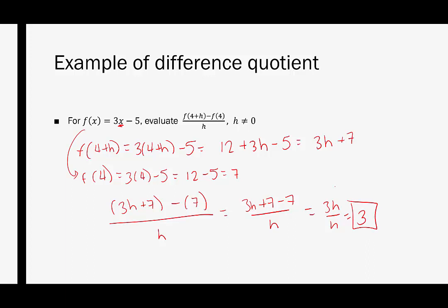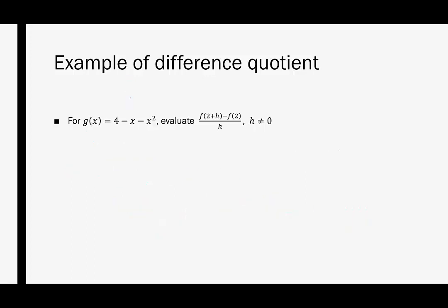The only reason this turned out to be 3 is because the function was a linear function. In the next few examples, they're not linear functions, so it will not just equal the first coefficient you see.